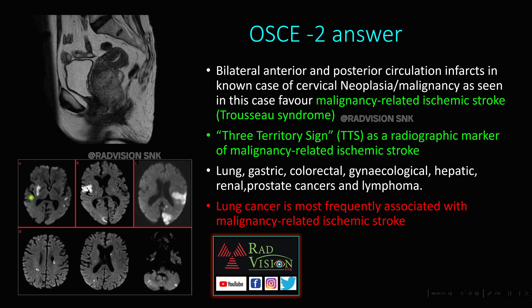In the same case, you can see there are multiple infarcts in the brain involving both the anterior circulation and the posterior circulation — bilateral anterior and posterior circulation infarcts in the setting of cervical malignancy. This is called malignancy-related ischemic stroke or Trousseau syndrome. The radiological sign is called the Three Territory Sign — a very important sign to remember. Whenever you see bilateral ACA and also PCA or posterior circulation strokes in a suspected case of malignancy, definitely suspect malignancy-related ischemic stroke.